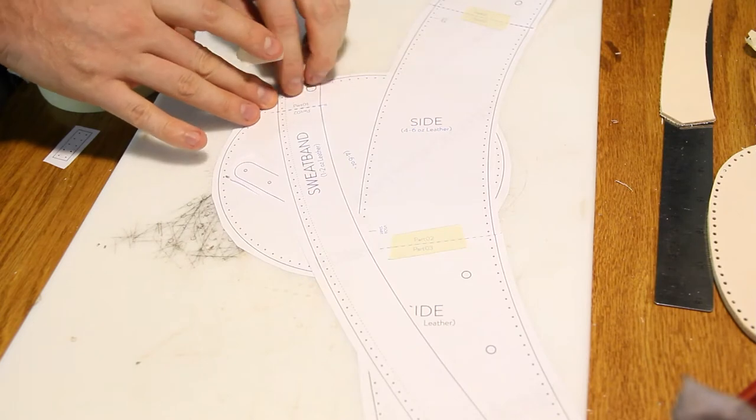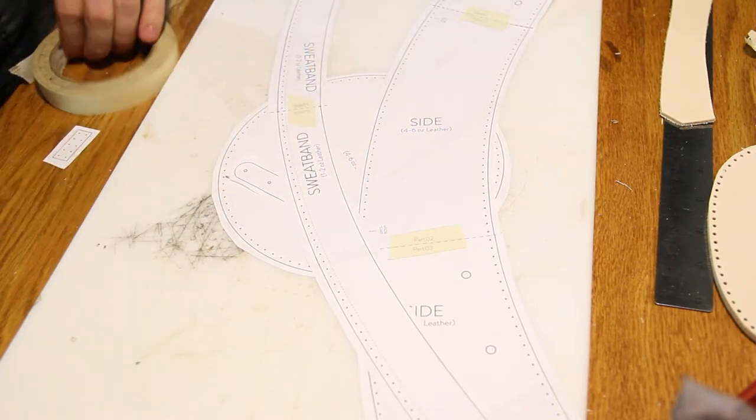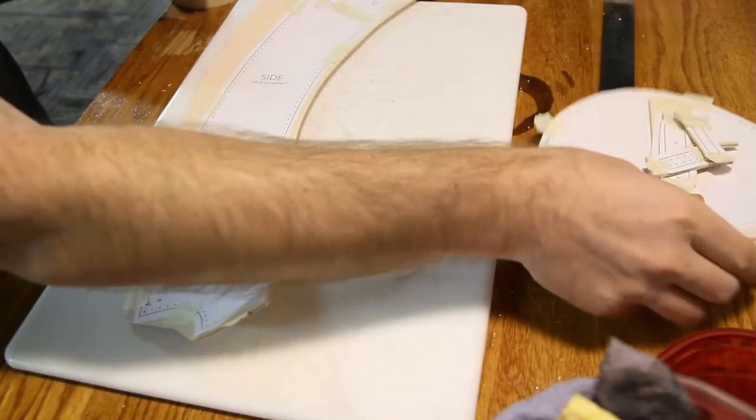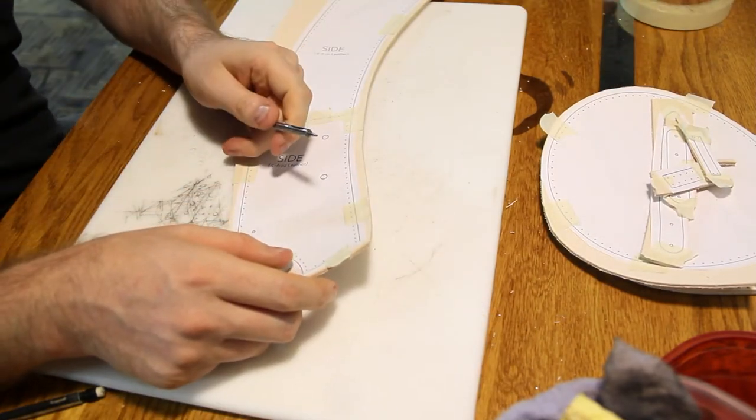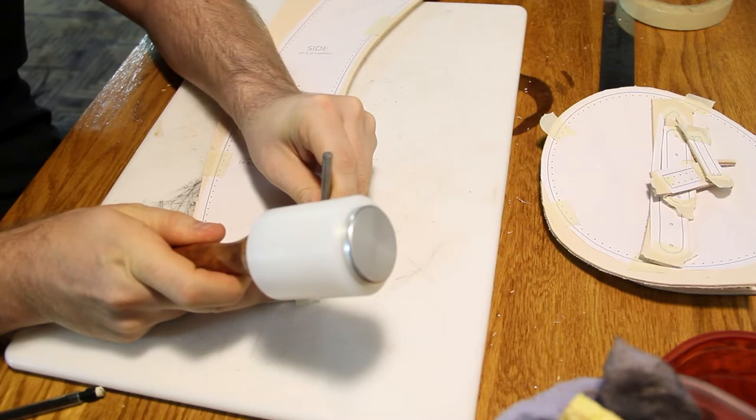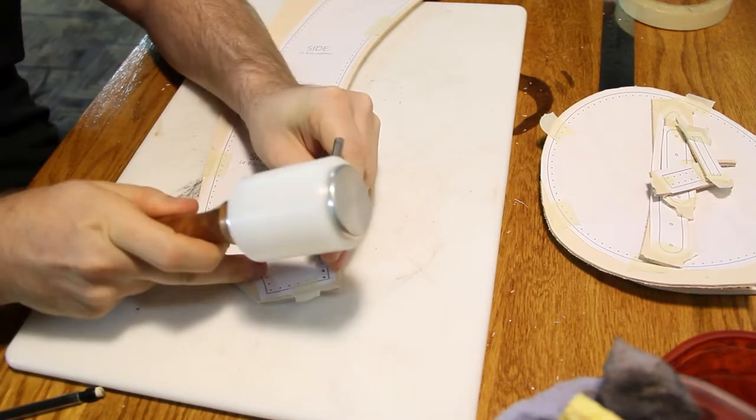The sweatband is also in two parts. I'm using five to six ounce veg tan leather. You're going to want to start punching the holes. I'm using a one millimeter hole punch.